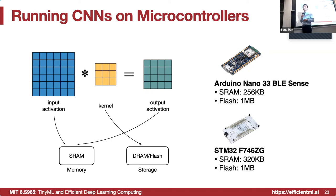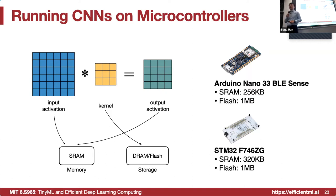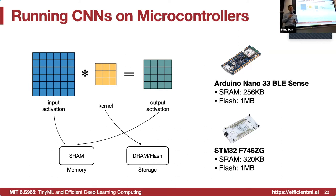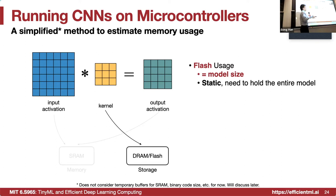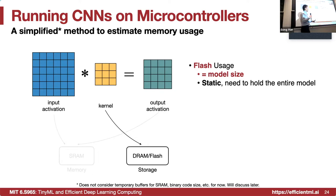Our job is to squeeze neural nets small enough to fit such tiny devices. The flash storage concerns the weights — the model size — since model weights are not changed, they can be put in static read-only memory. We need to hold the weights unchanged across the entire lifecycle of inference. The other side is SRAM, which is even smaller — a couple hundred kilobytes. We store input and output activations in SRAM, since we have to both read and write, and it's dynamic.